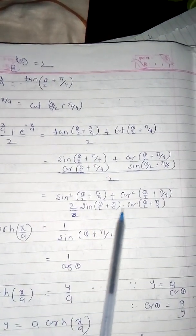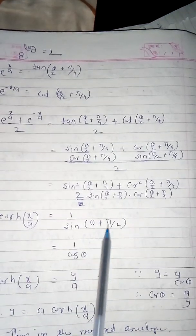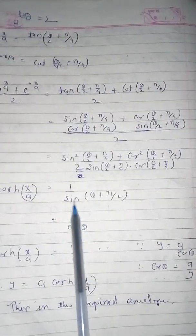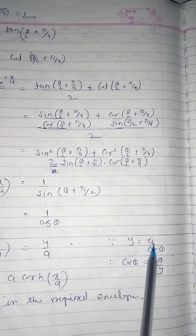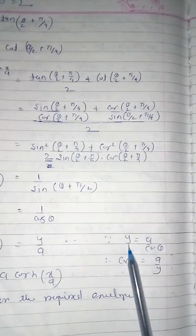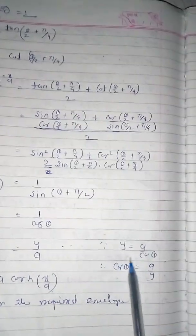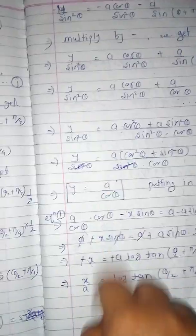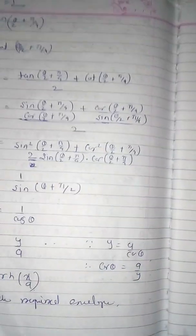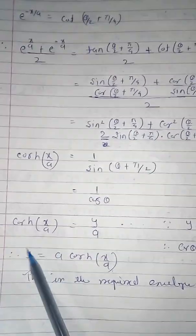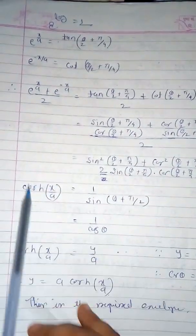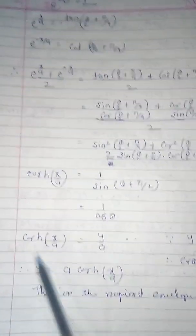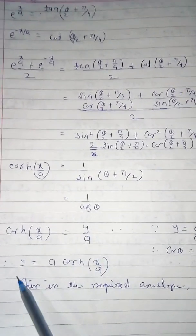Simplifying the right side using tan + cot = 1/(sin·cos) and the double angle formula, we get 1/sin(θ + π/2) = 1/cos θ. Since y = a/cos θ, we have cos θ = a/y. Therefore [e^(x/a) + e^(−x/a)] / 2 = y/a, which is cosh(x/a). Thus y = a·cosh(x/a), which is the required envelope.